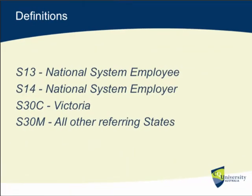Now for some definitions — this is where you'll need to work through the textbook and have it beside you. Have a look at section 13, which defines a national system employee. Section 14 deals with who is a national system employer: essentially a constitutional corporation, the Commonwealth, Commonwealth authority, members of flight crews, a body corporate incorporated in a territory, and a person who carries on an activity so far as they employ an individual. That is the definition of a national system employer.